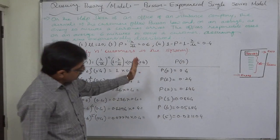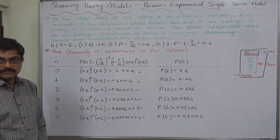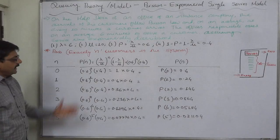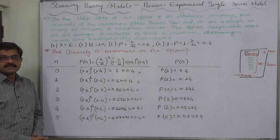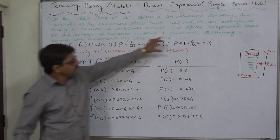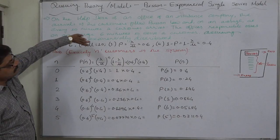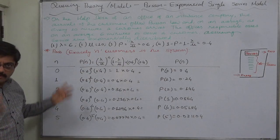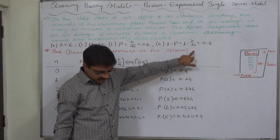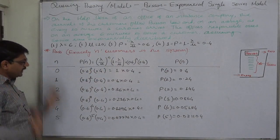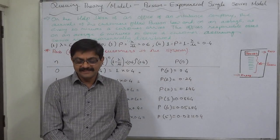The important conclusion is that the probability of a larger number of customers in the system becomes very low. To calculate the probability of exactly n customers in the system, we simply need to find the four quantities — arrival rate, service rate, utilization rate, and idle rate — from the problem, and then apply the formula. That's it. Thank you very much.